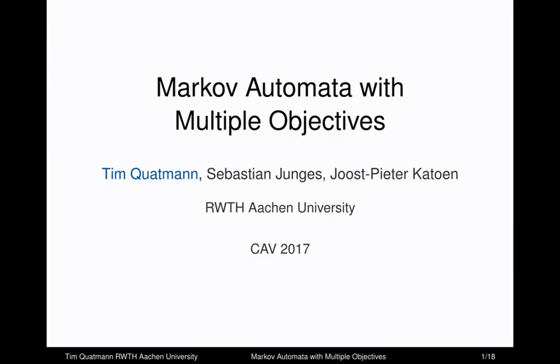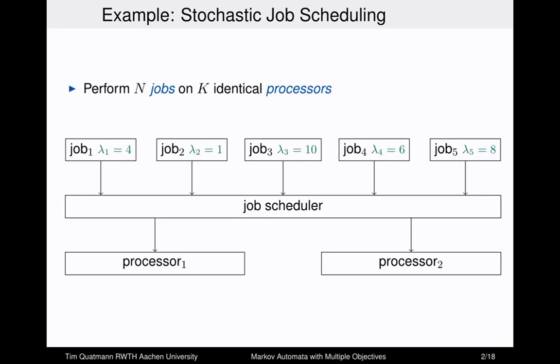This is Tim Quattmann and he's going to talk about Markov automata with multiple objectives. This is joint work with Sebastian Junges and Jost-Peter Katoen, all from Aachen. I would like to start the talk with some examples to motivate what we are doing.